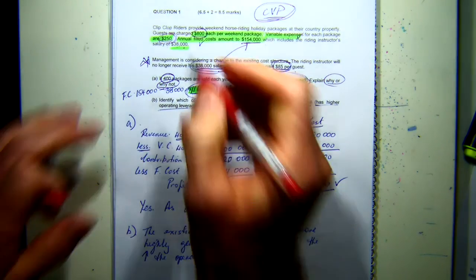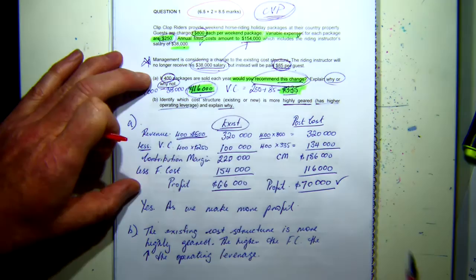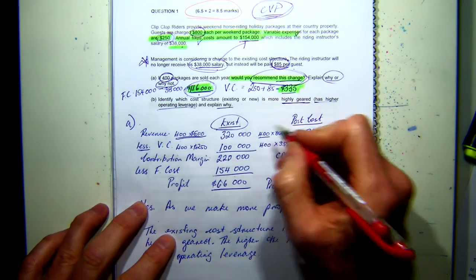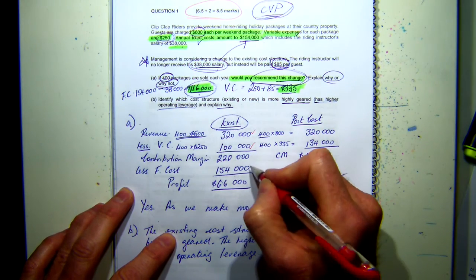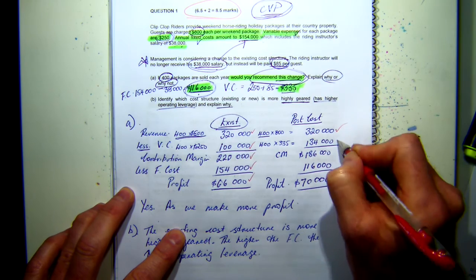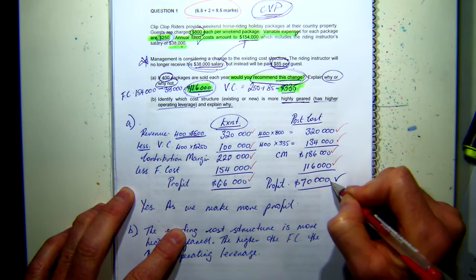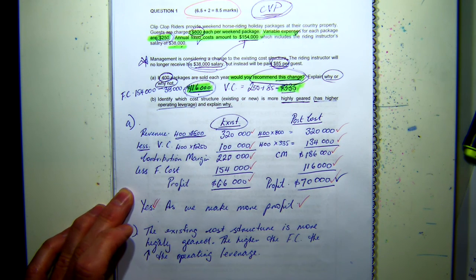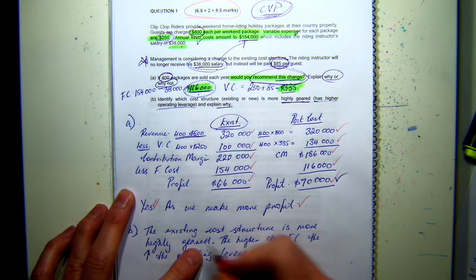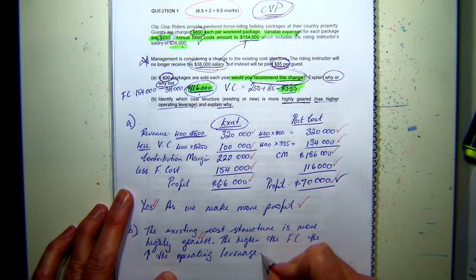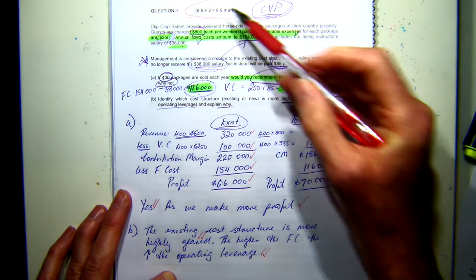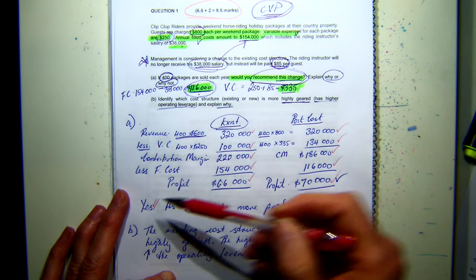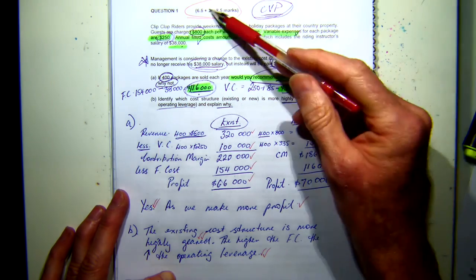At the top of the page you'll see marks. Every tick you see will be half a mark. So I'm giving you half a mark for each correct step - that's 13 ticks, giving me 6.5 marks for question A. And in question B it's two marks, so I've got to state that the existing cost structure is more highly geared and explain why - giving me my total marks.